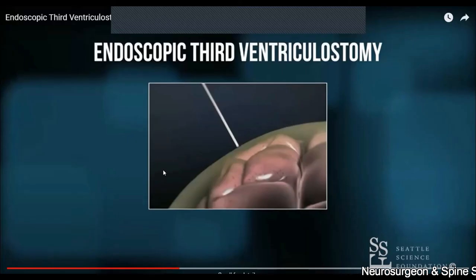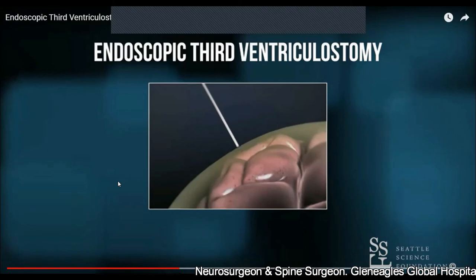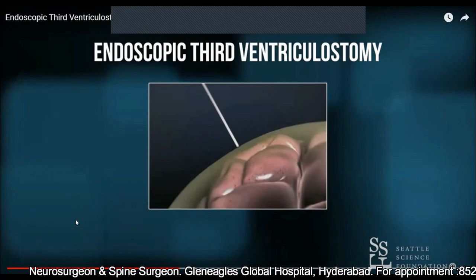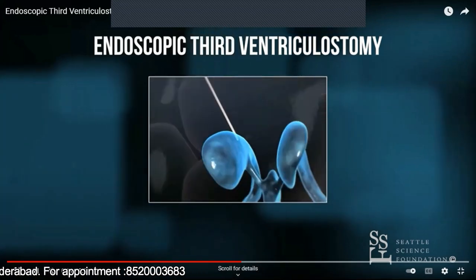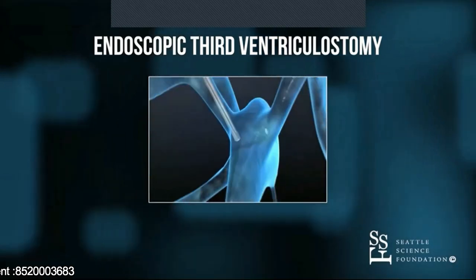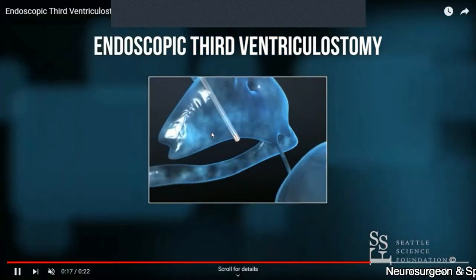Apart from the ventriculoperitoneal shunt, we have one more procedure that is also commonly done — this is known as endoscopic third ventriculostomy, or ETV. Let me show you the animation of endoscopic third ventriculostomy. The name itself explains it: ventriculostomy means a hole in the ventricle. It is done through an endoscopic approach — we place the endoscope into the ventricle and puncture the floor of the third ventricle.